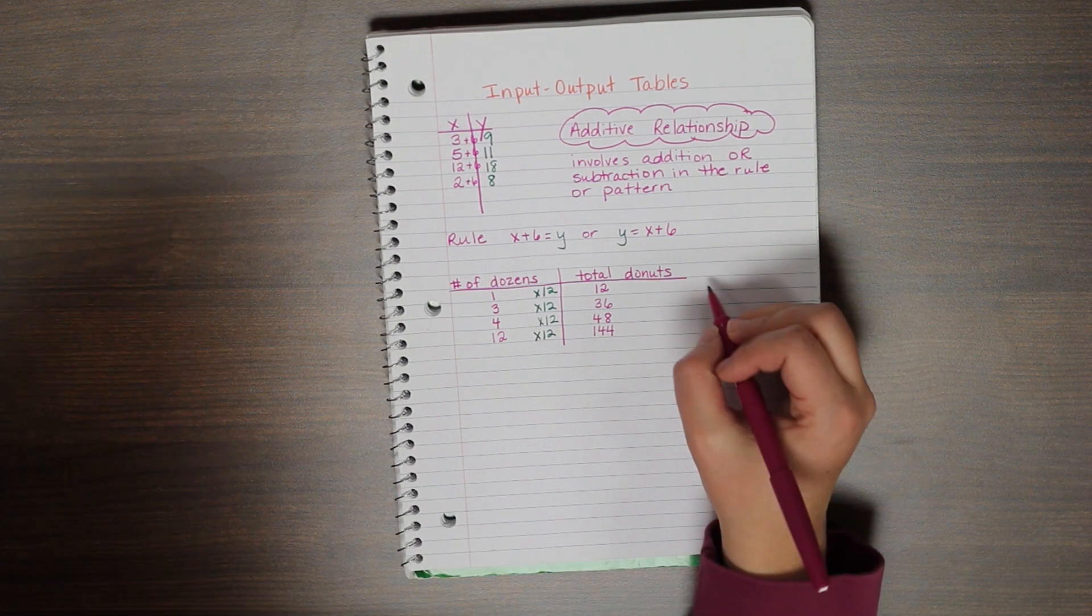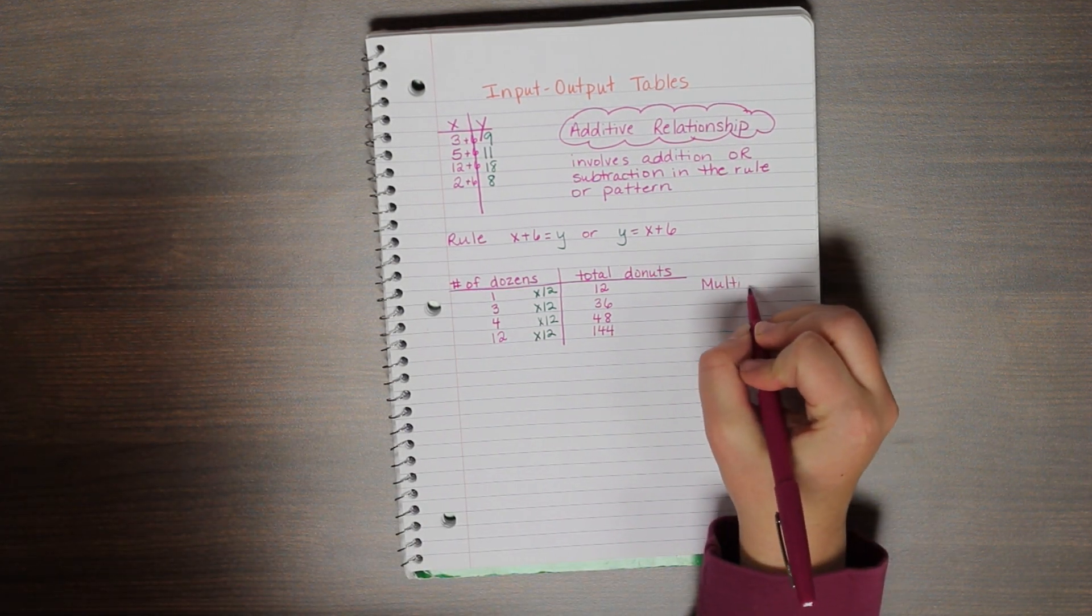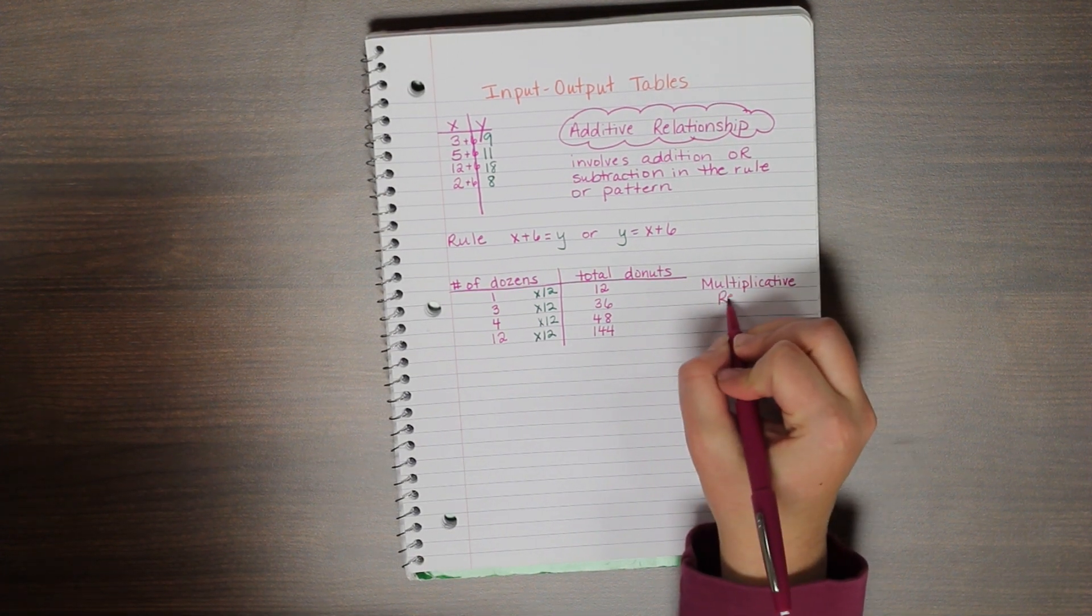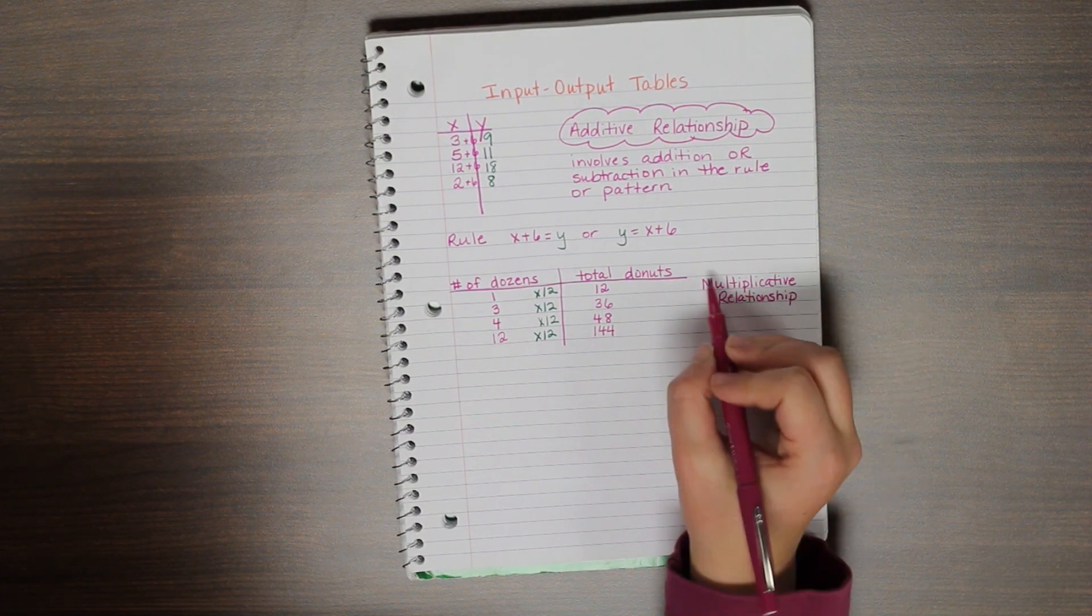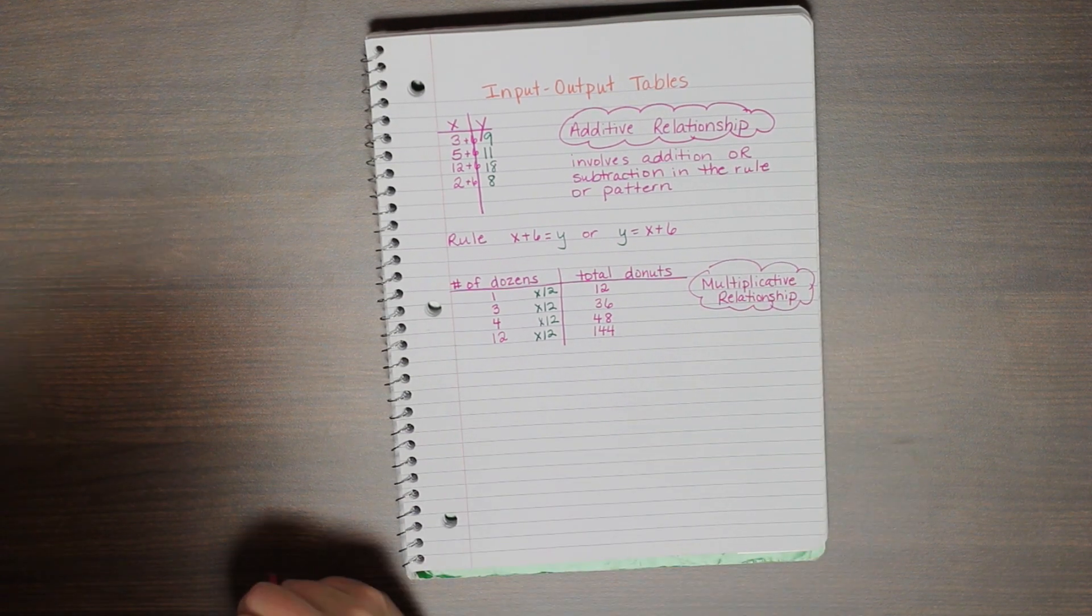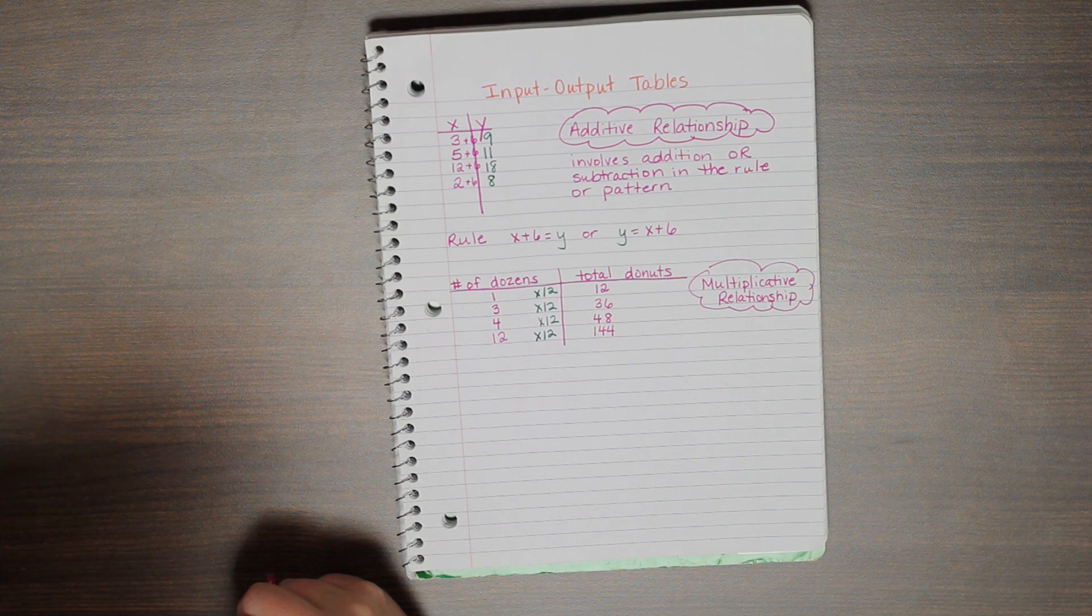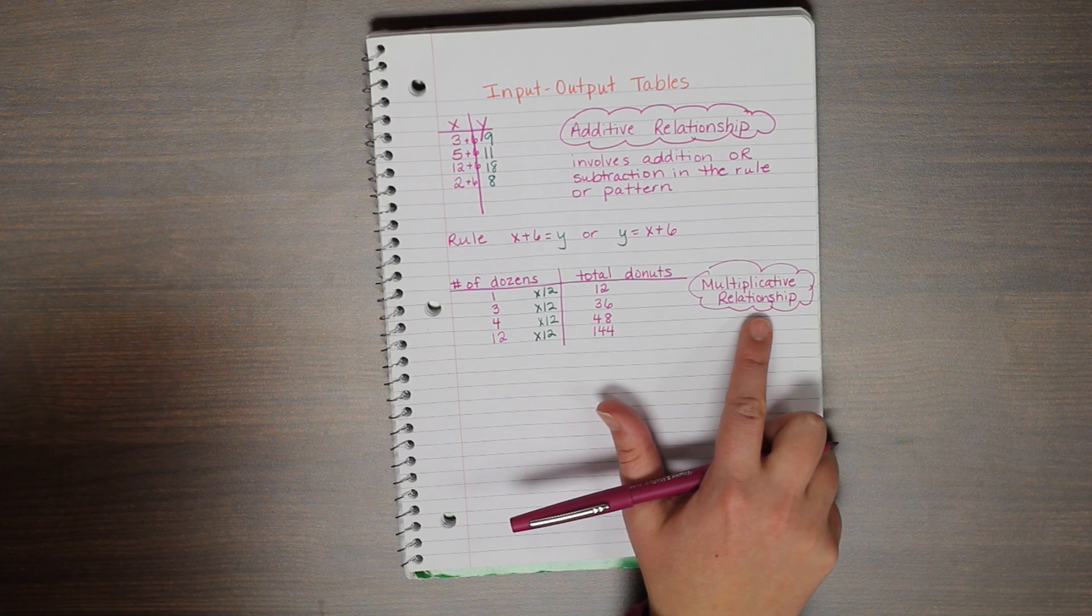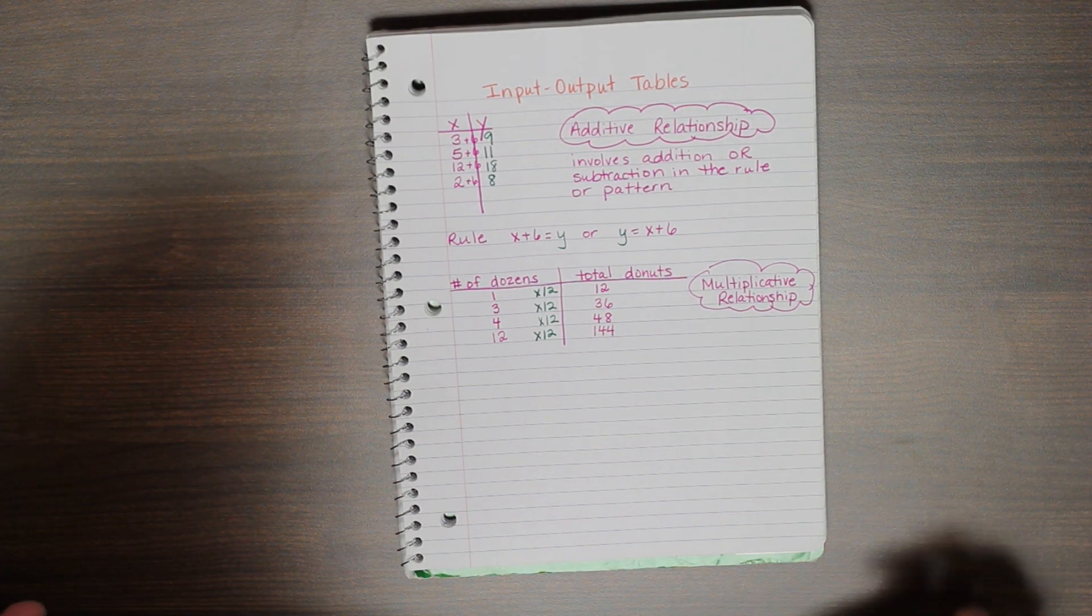So this is what we call a multiplicative relationship. Just like my additive relationship involved addition or subtraction because subtraction is the inverse of addition, multiplicative involves multiplication or the inverse of multiplication, division.